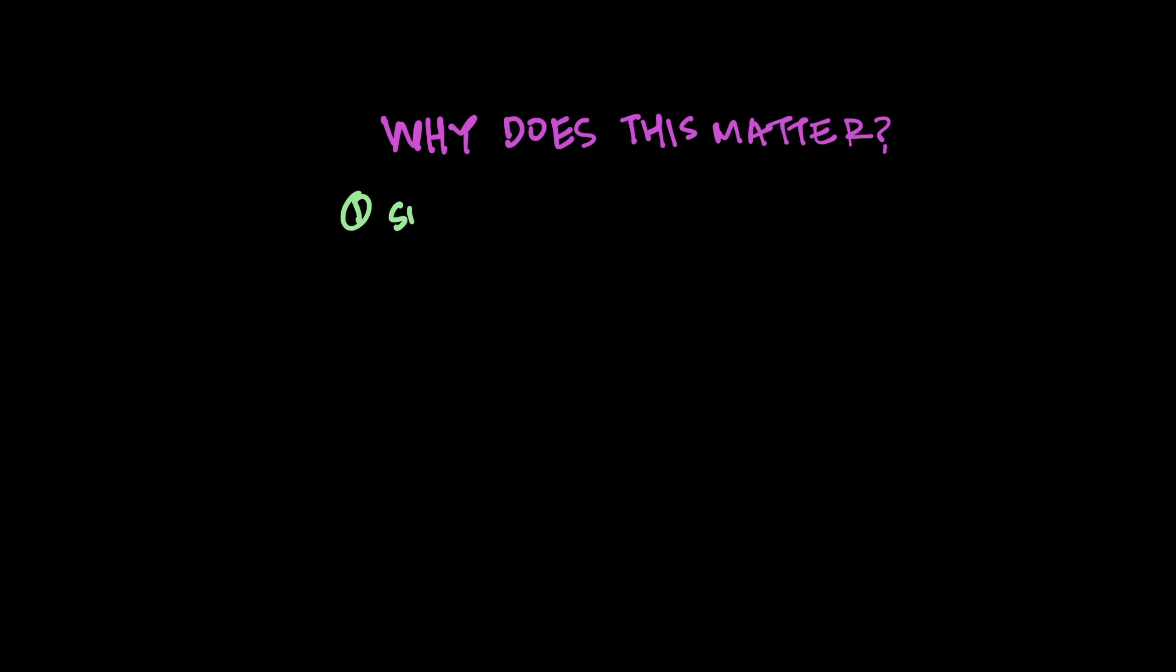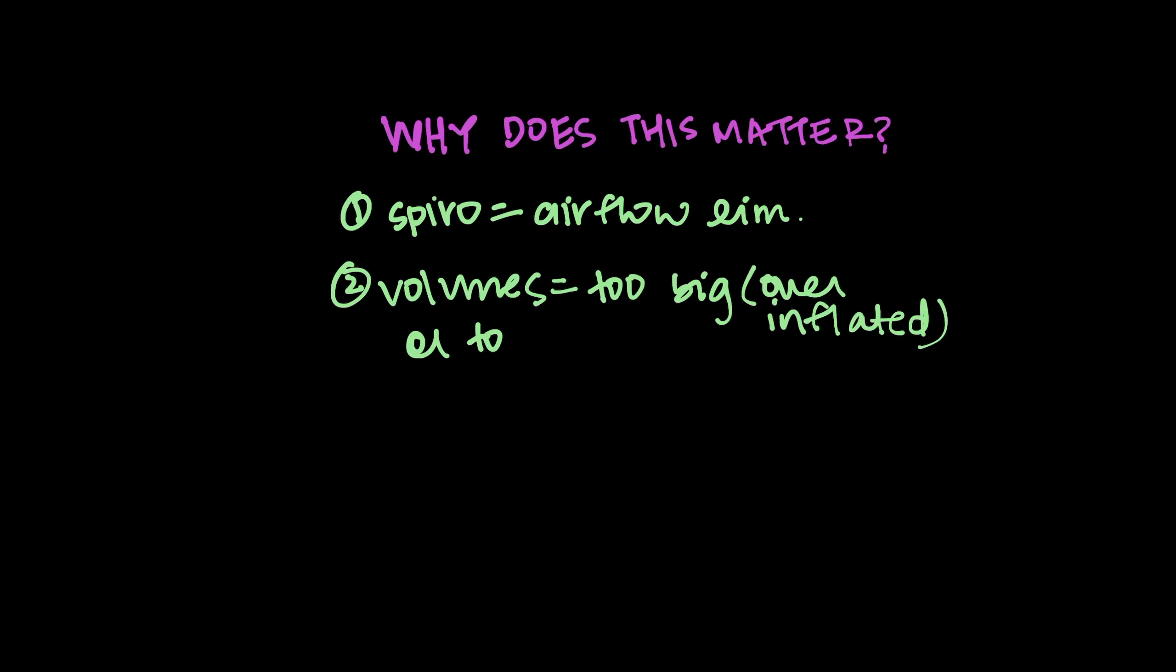So why does this matter? If we're doing another test, we want to know how we're going to use it. We talked about spirometry and how it can tell us about airflow limitation. We talked about volumes and how if they're too big, it can indicate overinflation or air trapping. If they're too small, it can indicate restriction.